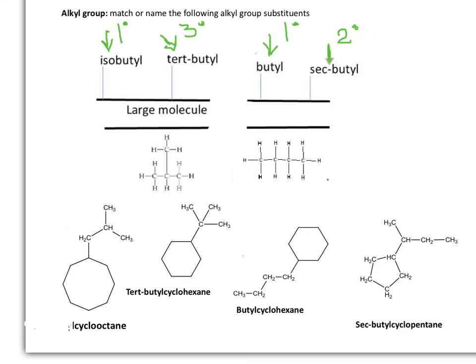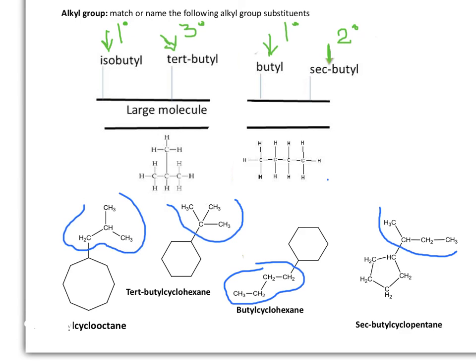Let's practice the alkyl groups just learned. This one is a straight chain — it's butyl. This is a secondary alkyl group — it's sec-butyl. This is a tertiary — tert-butyl. And this one is isobutyl. To write the name of the cycloalkane, we just need to write in front of the cycloalkane name what is the name of the substituent.